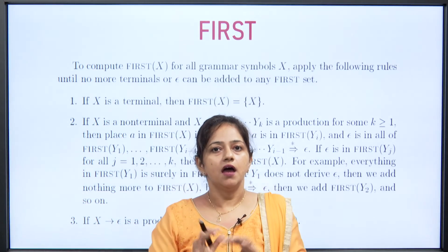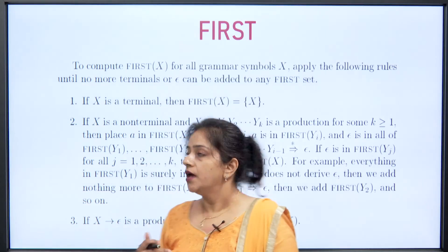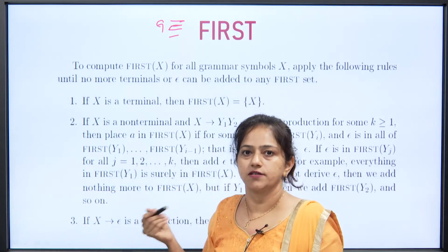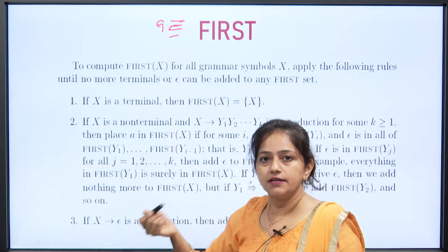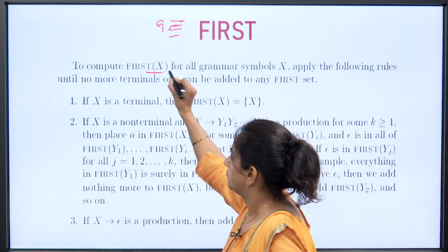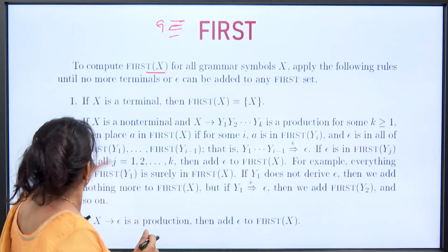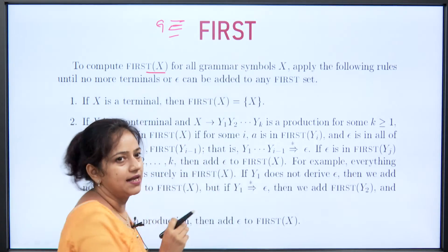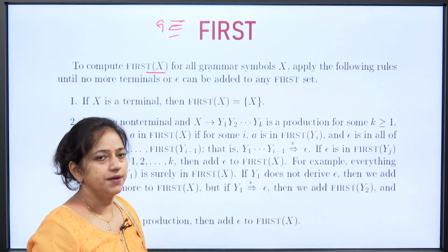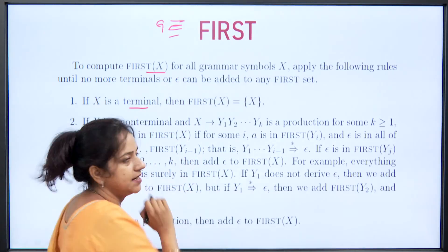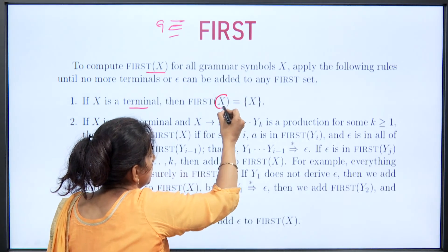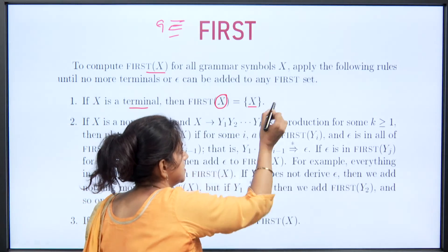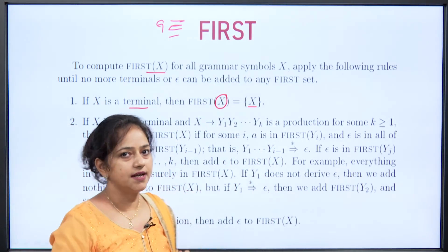Now we will discuss the algorithm for how to obtain FIRST for a given grammar G. We can obtain FIRST for any terminal or non-terminal. There are three main cases. Suppose we are obtaining FIRST of capital X, where X can be a terminal or non-terminal. First case: if X is a terminal, then FIRST(X) = {X}. It is a very simple case — FIRST of a terminal is the terminal itself.